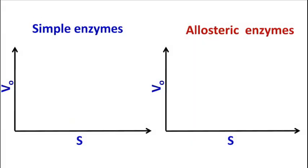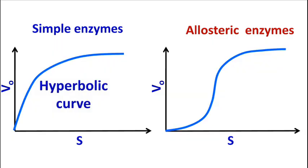If we see the graphs, then simple enzymes show hyperbolic curve whereas the allosteric enzymes show sigmoidal curve. It should be noted that